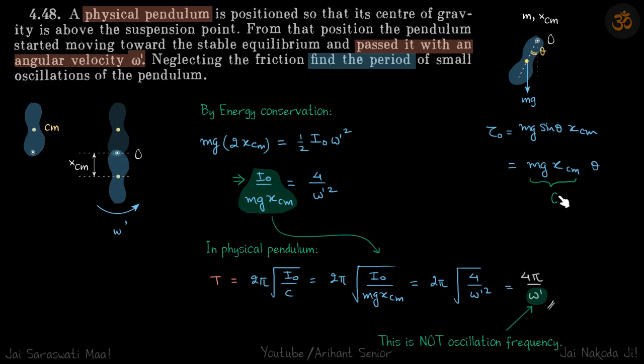From what is given, the change in potential energy equals the gain in kinetic energy. So mg times 2xcm equals half Io omega dash squared. This gives the value of Io upon mg xcm to be equal to 4 over omega dash squared.